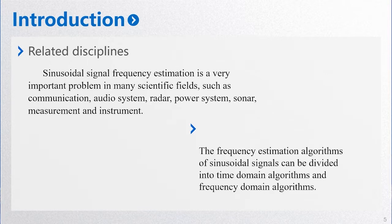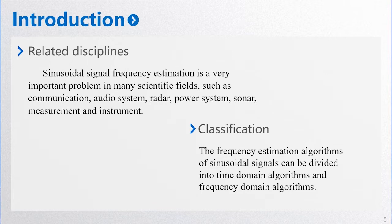It has just been mentioned that accuracy and algorithm complexity are the keys to judge whether the algorithm is good or not. In addition, the threshold at low SNR and the performance at high SNR are also important factors to measure frequency estimation algorithms. Frequency estimation algorithms can be divided into two categories: the time domain estimation algorithm and the frequency domain estimation algorithm. The frequency domain estimation algorithms are mainly based on DFT and DTFT, and have advantages such as fairly little computation and important signal-to-noise ratio gain.